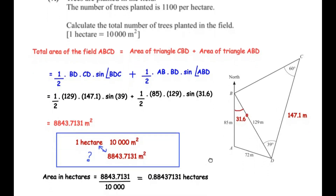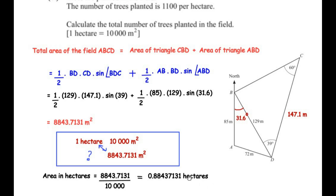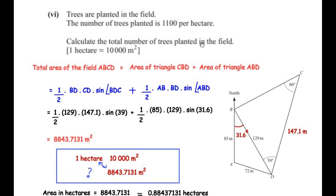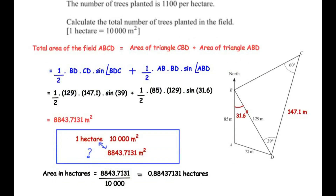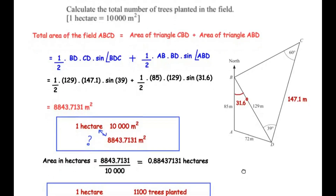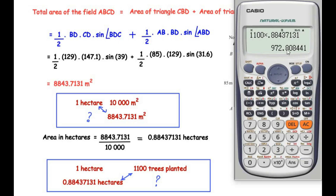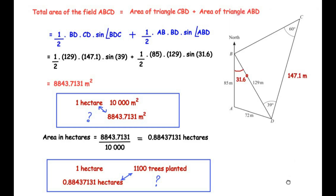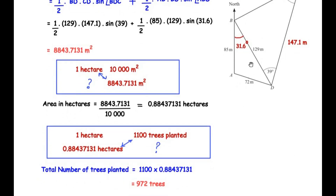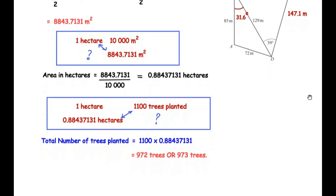Converting to hectares: 8843.7131 / 10000 = 0.88437131 hectares. Using cross multiplication with 1100 trees per hectare: total trees = 1100 × 0.88437131 = 972.8. So the total number of trees planted is 972 or 973 trees.